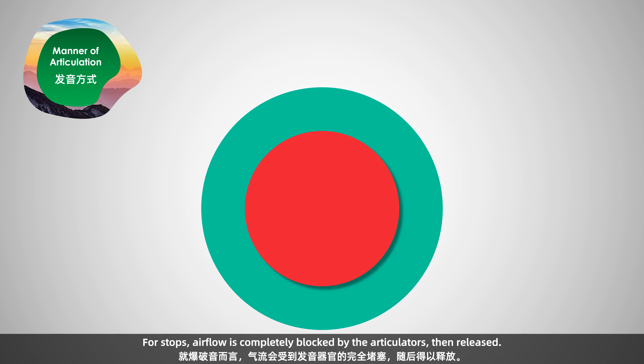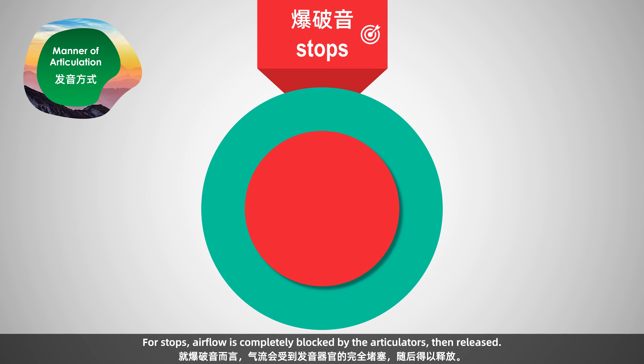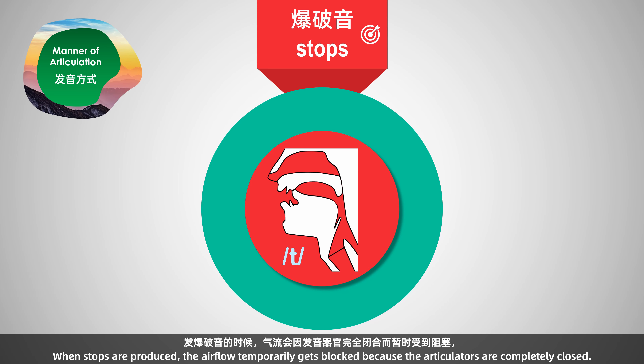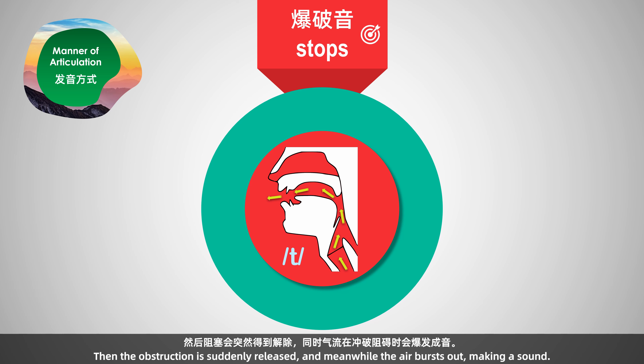For stops, airflow is completely blocked by the articulators, then released. 发爆破音的时候，气流会因发音器官完全闭合而暂时受到阻塞，然后阻塞会突然得到解除，同时气流在冲破阻碍时会爆发成音。